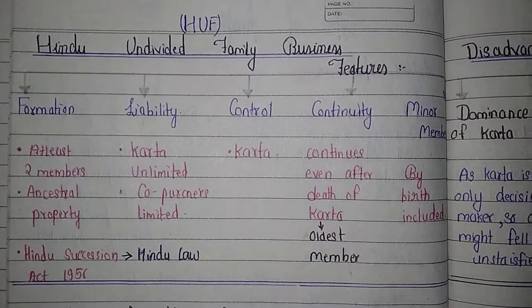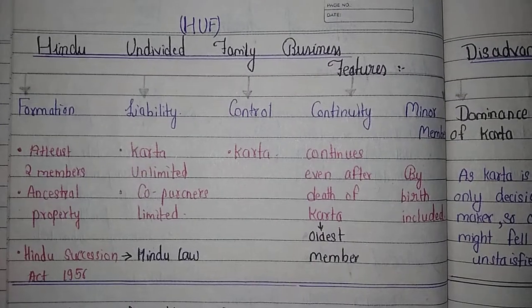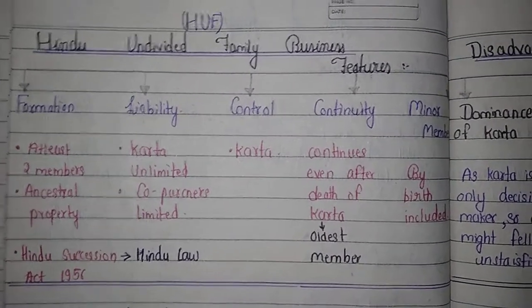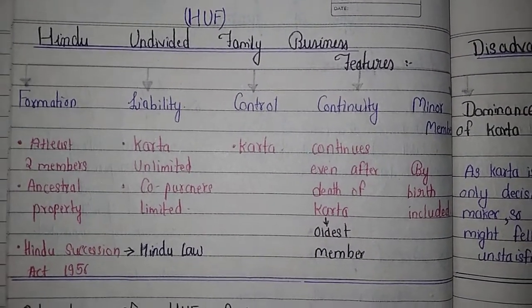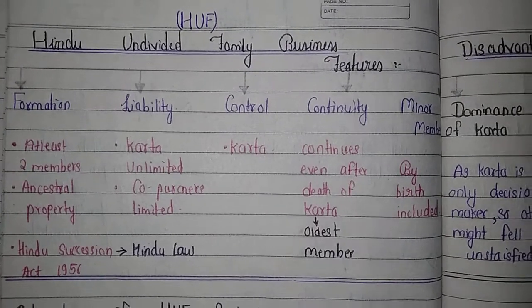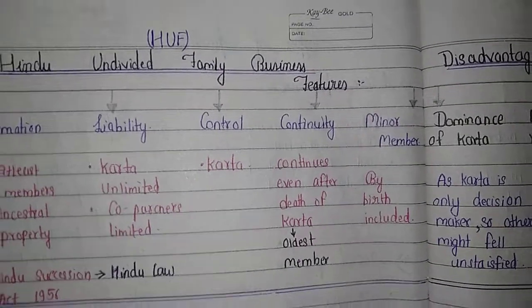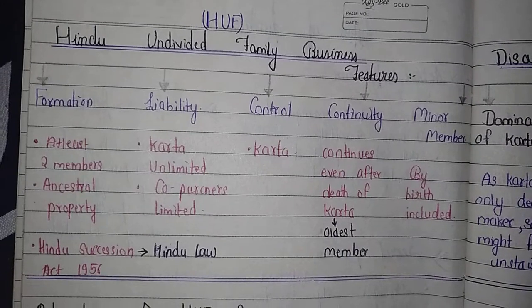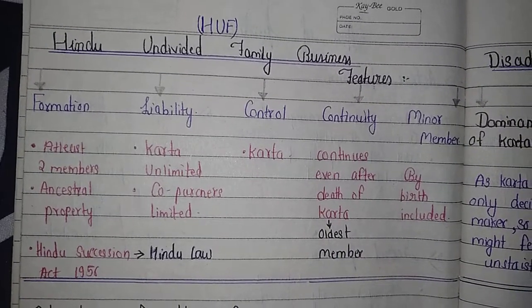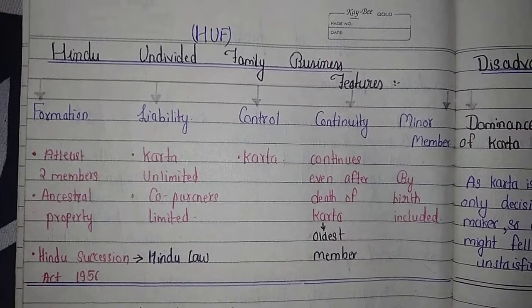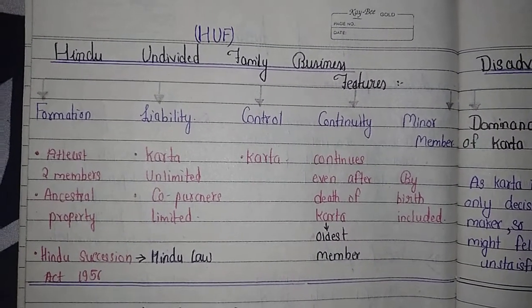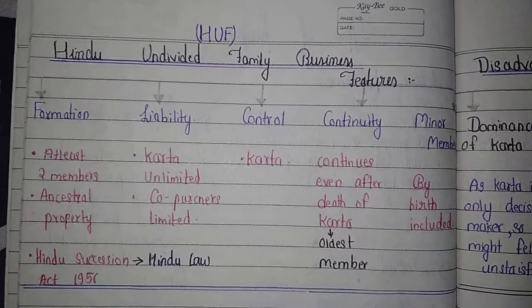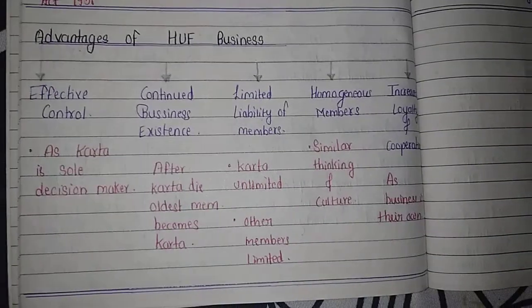Regarding continuity, HUF is a very continuous business — even after the death of the Karta, the oldest member will become the next Karta. A minor member refers to someone who takes birth in the family; they are included as a minor member by birth only.